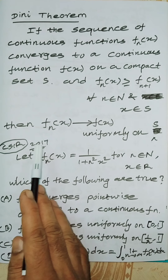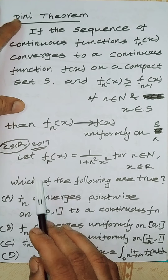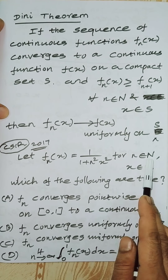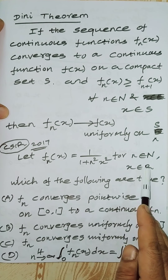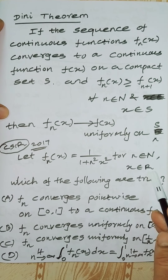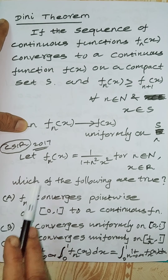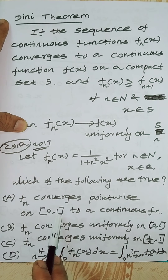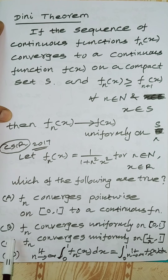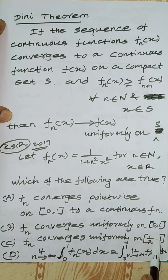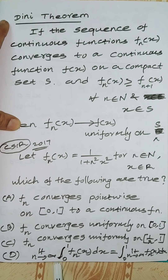Next problem: CSIF exam 2017, June. Let fn(x) equal to 1 divided by 1 plus n squared x squared, for n belonging to natural numbers and x belonging to real numbers. Which of the following are true? Option A: fn converges pointwise on the closed interval [0,1] to a continuous function. Option B: fn converges uniformly on closed interval [0,1]. Option C: fn converges uniformly on closed interval [1/2, 1]. Option D: the limit as n tends to infinity of the integral from 0 to 1 of fn(x) dx equals the integral from 0 to 1 of the limit as n tends to infinity of fn(x) dx.